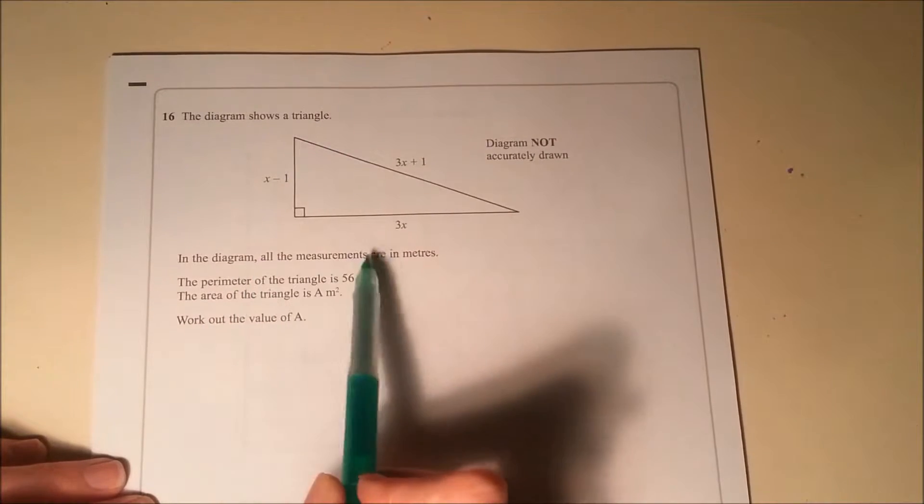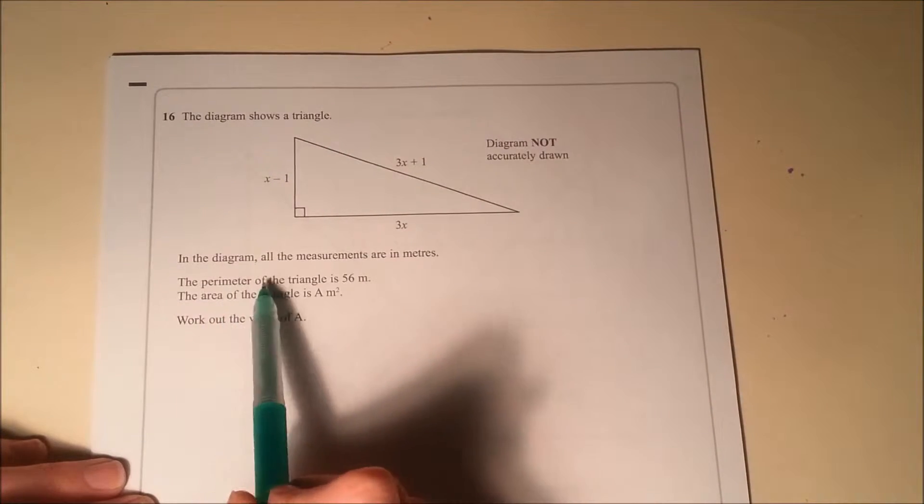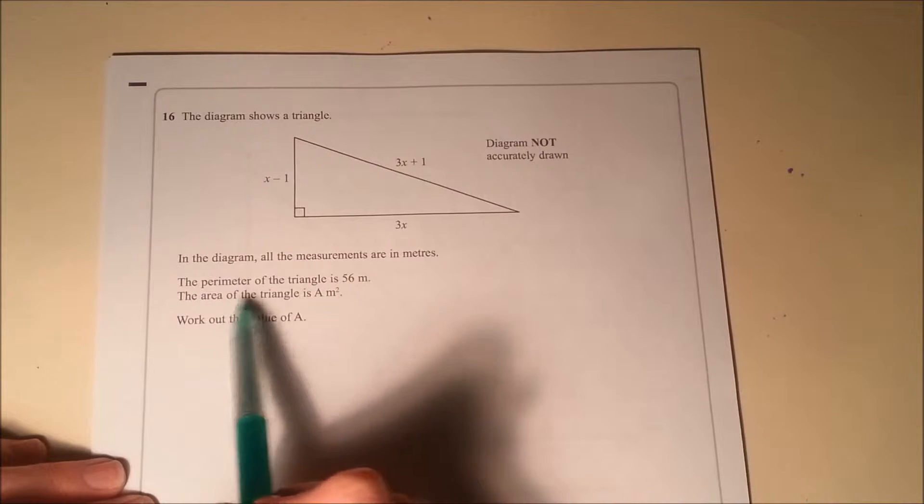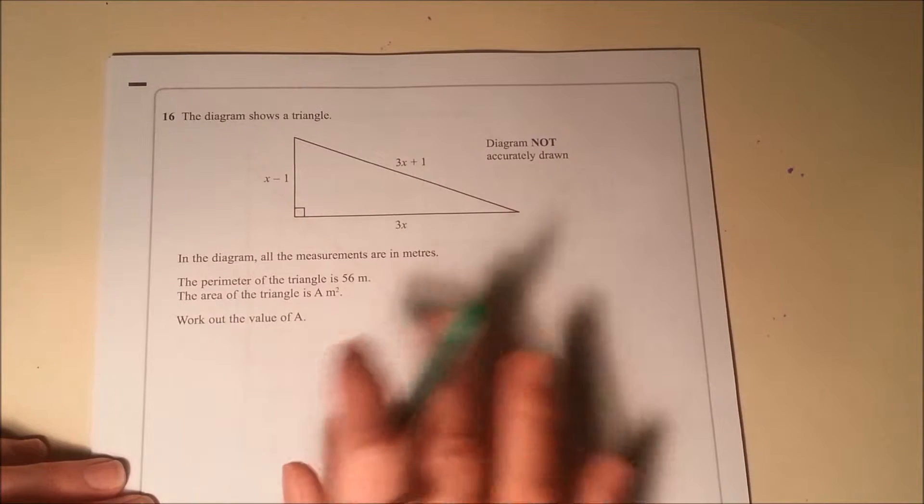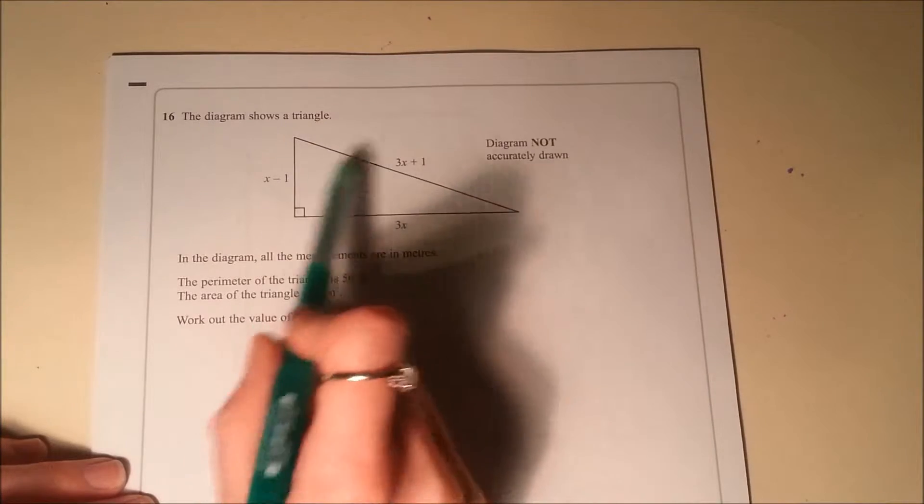So we've got a triangle, all the measurements are in meters. The perimeter of the triangle is 56 meters, the area of the triangle is a meter squared, work out the value of a. So this is a perimeter and area problem, but we've also got a little bit of algebra.